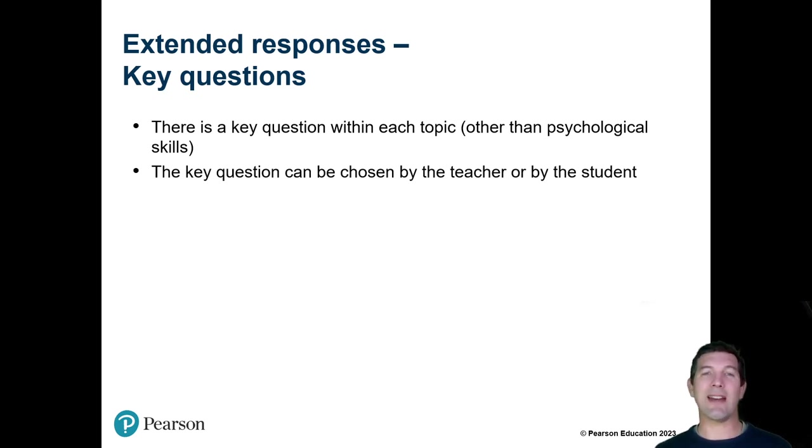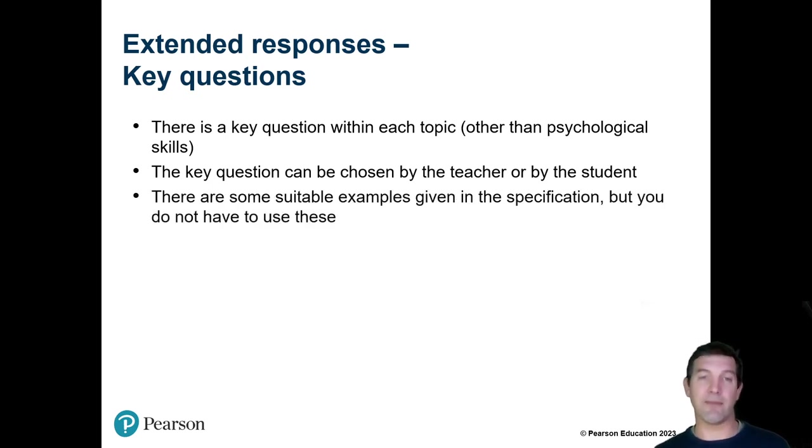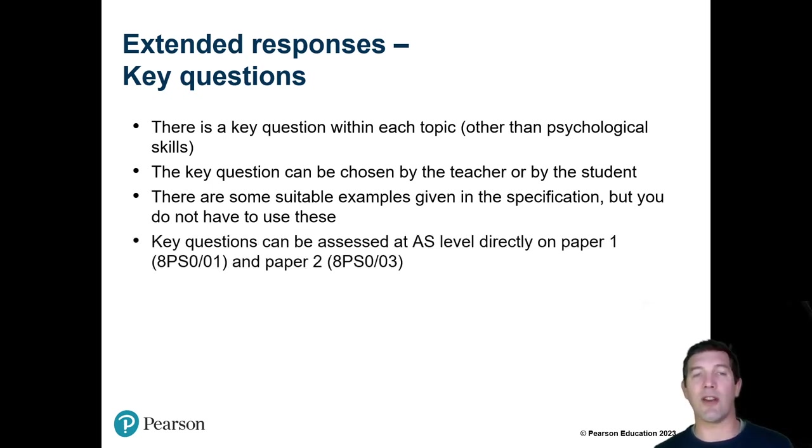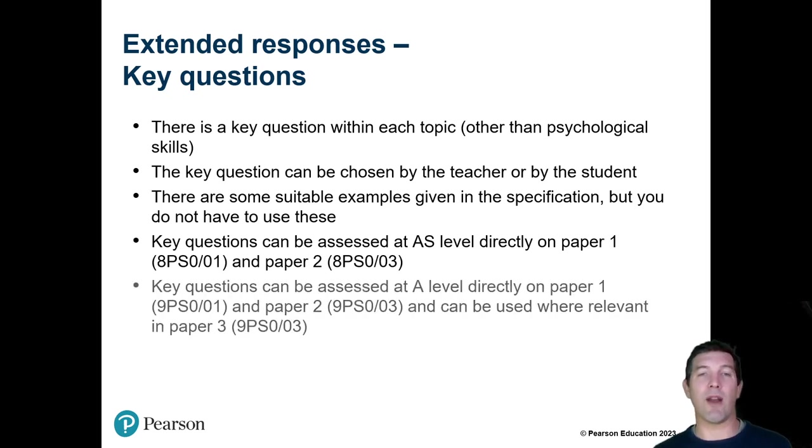As I'm hopefully you're aware, it can be chosen by the teacher or the student, so this is quite useful for students to know. If they don't remember the exact wording of the key question, that doesn't really necessarily hold them back at all because the examiner won't know what key question the teacher chose. As long as the question that the student addresses allows them to hit the assessment objectives, which we'll cover in a second. So there's suitable examples in the spec as you will most likely know, but you don't have to use them, and they can be directly assessed on paper one and paper two at A level and on both the AS papers.